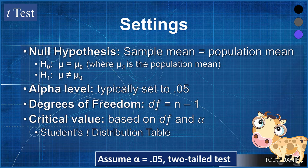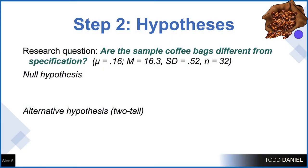Our degrees of freedom are n minus one, the size of the sample minus one. The critical value is going to be based upon the degrees of freedom and the alpha level of 0.05. You can look up a critical value using students t-distribution table, which I will show you in a moment. But now that we have an idea what the settings should be, let's move on to our remaining steps of hypothesis testing.